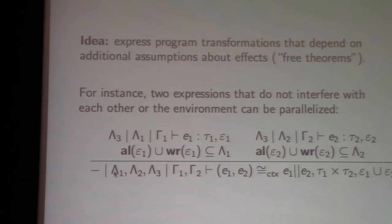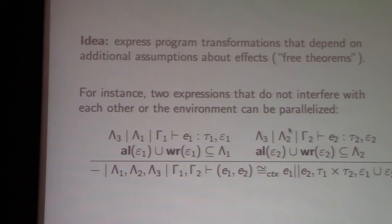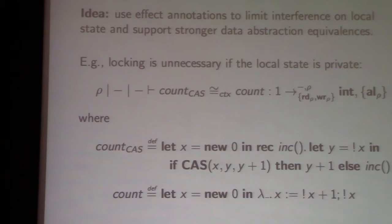We have no public regions — just to ensure there's no interference from the environment — and then we restrict all effectful operations of e1 to the regions that remain private to e1, and likewise for e2. We restrict all allocations and writes to lambda 2, so we only allow the computations to read from the shared part. This is enough to ensure they don't interfere and that we can parallelize them.